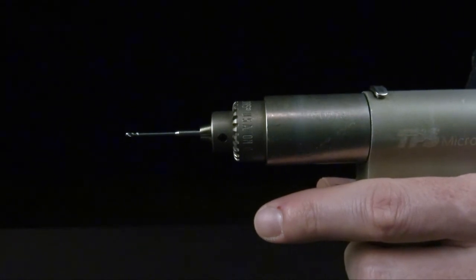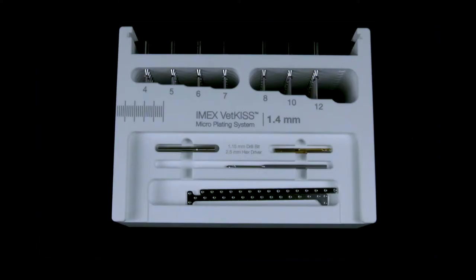Implant caddies are included with each size VetKISS starter set. These autoclaveable containers provide easy access to implants, drill bits, and the corresponding hex driver. Each caddy is laser marked appropriately to assist with implant selection and inventory control. The integrated screw rack helps assure that screws are properly organized according to screw length. Additionally, a scale is provided to double-check actual screw length selection if desired.